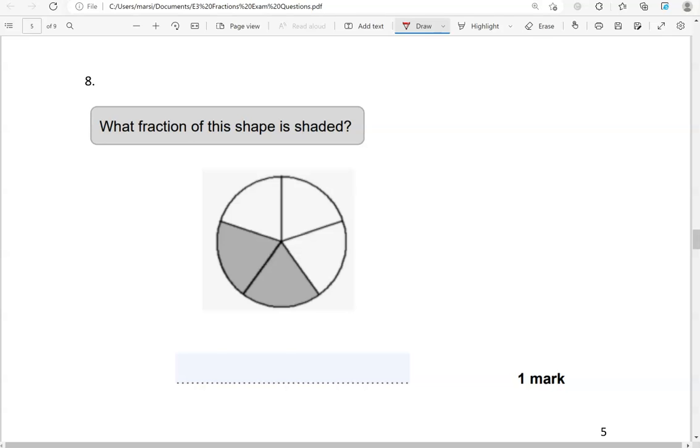What fraction of this shape is shaded? It's two parts out of five. So two-fifths of the shape is shaded.